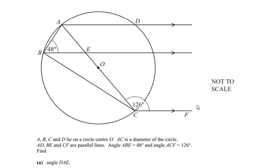Hello and welcome to my channel. In this video we are going to solve an example on circle theorems. A, B, C and D lie on a circle with center O, so we can see that there are four points A, B, C and D which are on the circle and the center of the circle is at O. AC is a diameter of the circle, passing through the center and hence it is the diameter.